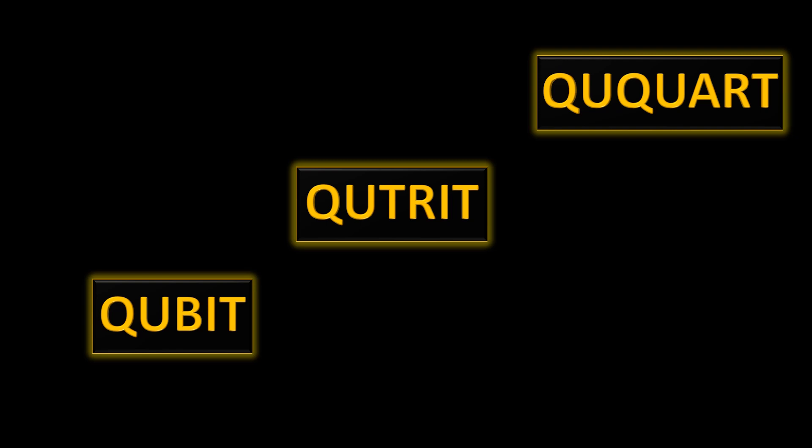But if I talk about qutrit there are three mutually orthogonal states so it's a three-level quantum mechanical system. And as you might have guessed ququart is a four-level quantum mechanical system where we have four mutually orthogonal states. So as you go up the order the complexity increases. So it's more and more difficult to work with the higher level systems and therefore you see qubit a lot in quantum computing because it's the simplest quantum mechanical system that you can build.